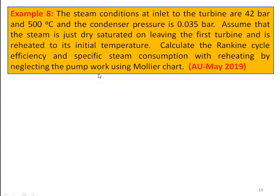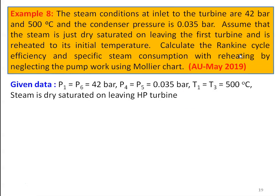Calculate the Rankine cycle efficiency and specific steam consumption with reheating, neglecting the pump work, using the Mollier chart. The earlier problems were solved with the help of steam tables; now it is specifically given to use the Mollier chart. The Mollier chart is a graphical representation of all the steam properties, with specific entropy on the x-axis and specific enthalpy on the y-axis. Given data: initial pressure P1 = 42 bar, T1 = T3 = 500°C, condenser pressure P4 = P5 = 0.035 bar. The steam is dry saturated on leaving the high pressure turbine.